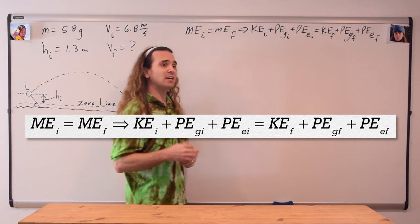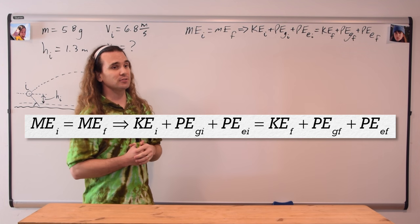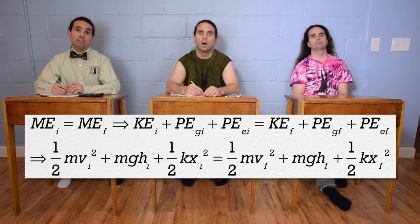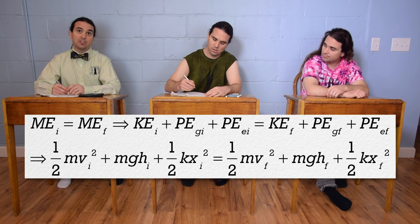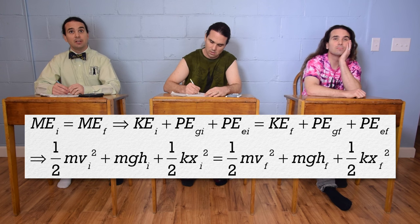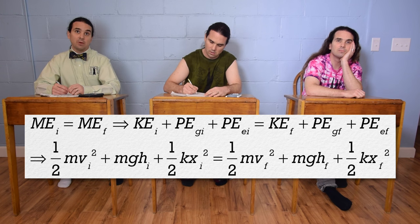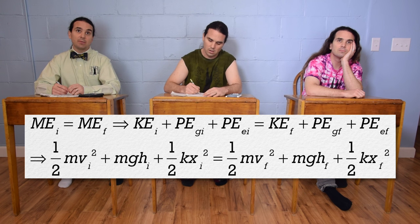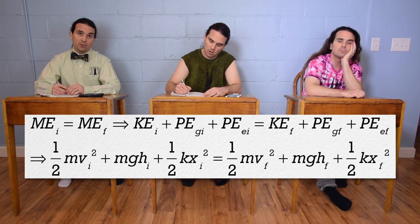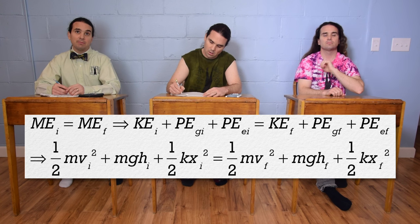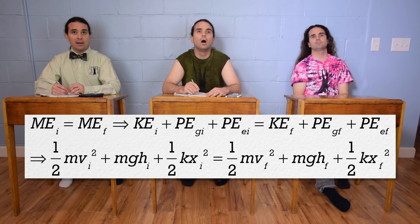Billy, could you please give me the equations for all the mechanical energies? One half mass times velocity initial squared, plus mass times acceleration due to gravity times height initial, plus one half times the spring constant times displacement from equilibrium position initial squared, equals one half mass times velocity final squared, plus mass times acceleration due to gravity times height final, plus one half times the spring constant times displacement from equilibrium position final squared.